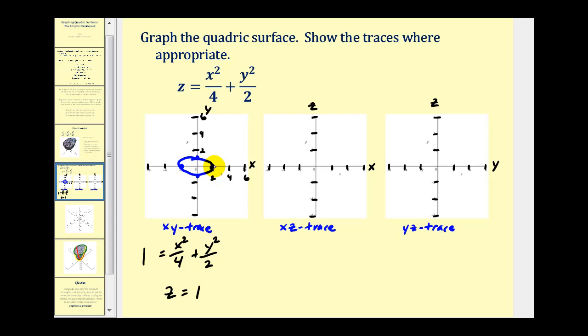So this tells us that any trace where z is greater than zero would be an ellipse.